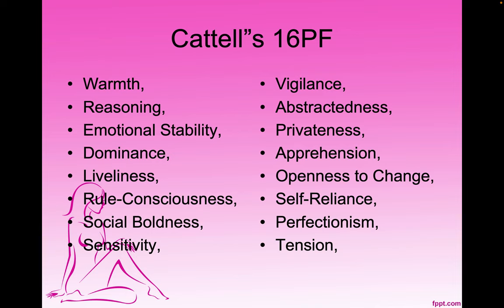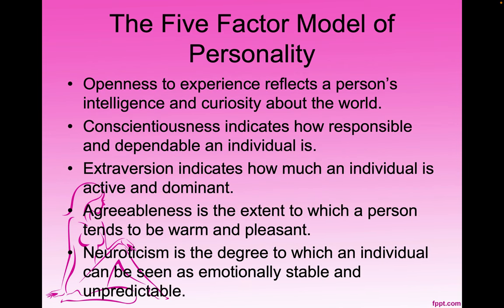Cattell had 16 personality characteristics including warmth, reasoning, emotional stability, dominance, liveliness, rule-consciousness, social boldness, sensitivity, vigilance, abstractedness, privateness, apprehension, openness to change, self-reliance, perfectionism, and tension. From these, the five-factor model identified: openness, conscientiousness, extroversion, agreeableness, and neuroticism. Tupes and Christal found these five were the best predictors of a good Air Force officer.